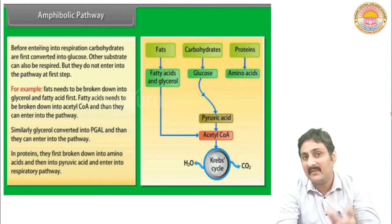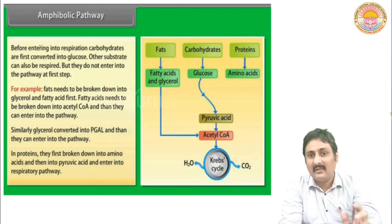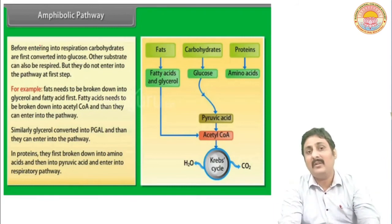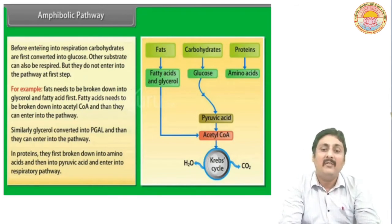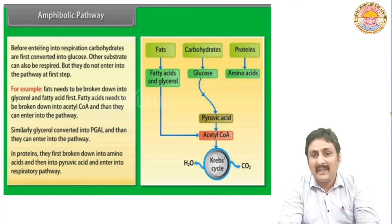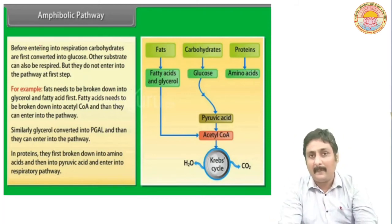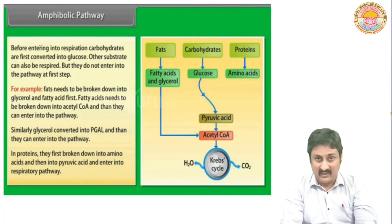Now, what happens if the body requires fat or protein and intake is less? In that condition, acetyl coenzyme A will form fatty acid and glycerol instead of entering the Krebs cycle. When protein is required, from pyruvic acid, amino acids will be formed. From acetyl coenzyme A, amino acids will form and then form the required protein. So both anabolism and catabolism are taking place here.